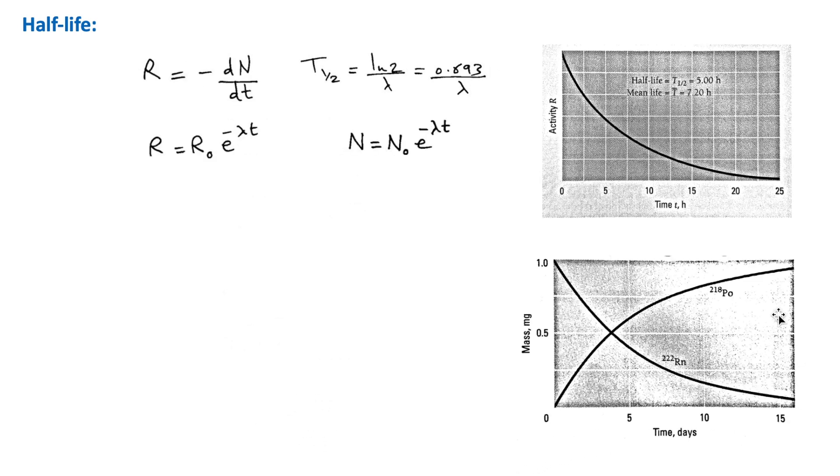This figure shows the alpha decay of the gas radon-222 into the polonium isotope 218. If we start with 1 mg of radon in a closed container, then after a half-life of 3.82 days, only 0.5 mg will remain. Half of the initial value will remain after the half-life of 3.82 days.